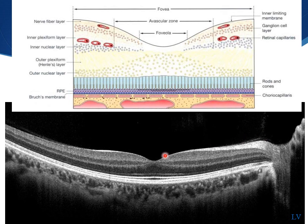Next, you should comment on the foveal contour. The foveal contour could become disrupted secondary to vitreomacular traction or epiretinal membranes, or large areas of fluid and cystic areas pushing up on the fovea.